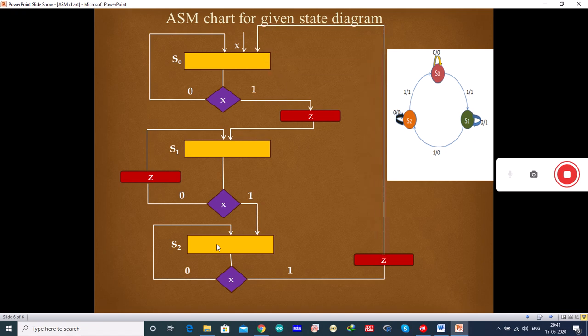So, it goes to S0. This is how you will draw ASM chart for any given state diagram.